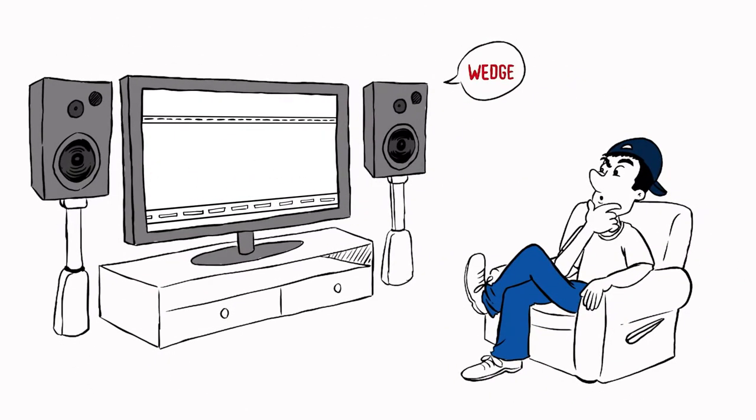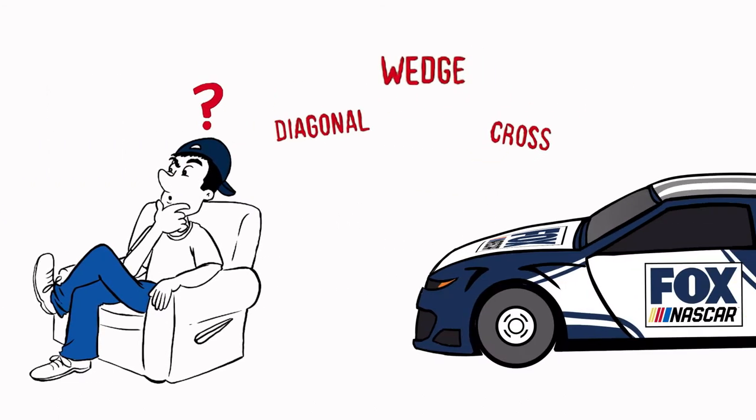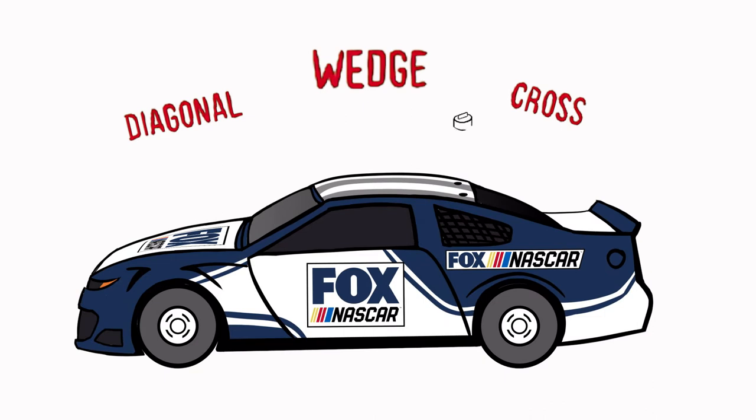You may have heard the term wedge and wondered what it meant. How about diagonal? What about cross? They are multiple terms which all describe the same thing, and whatever you call it, it is vital to the balance of the race car.